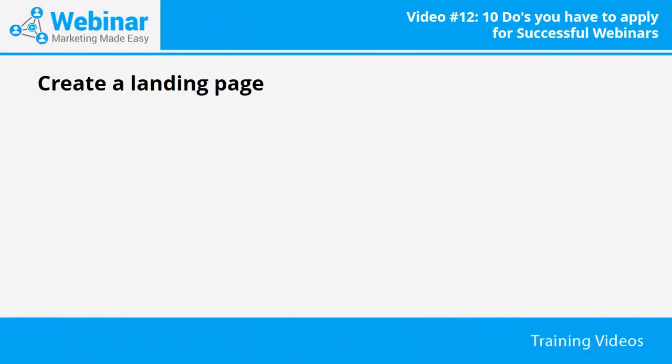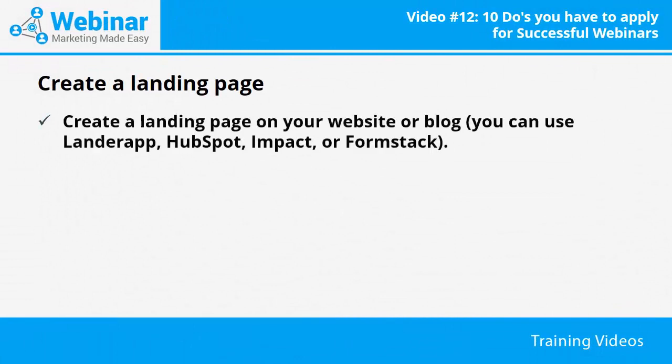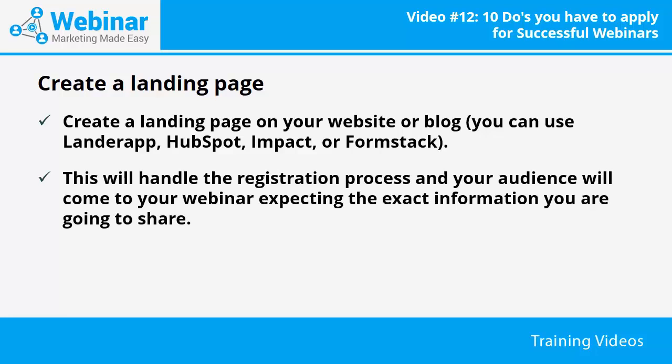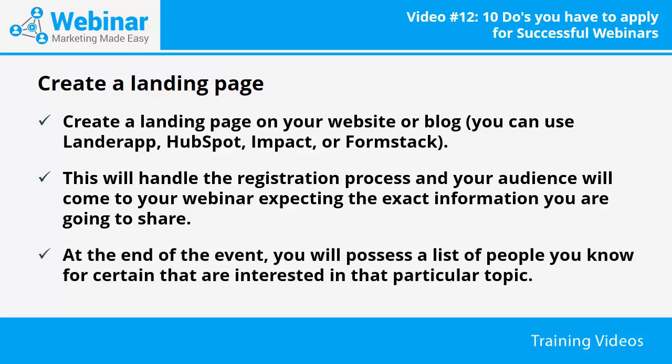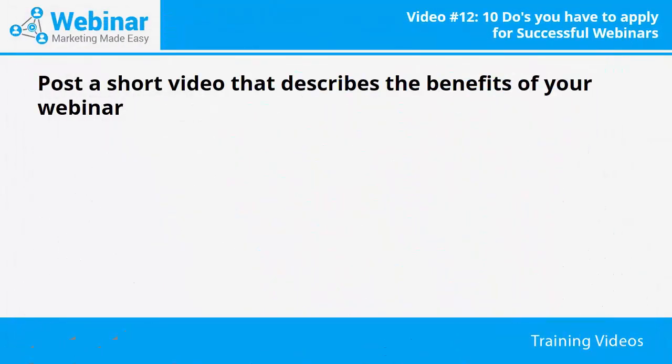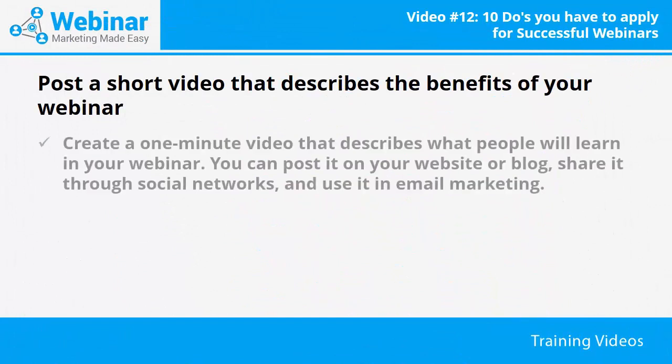Create a landing page on your website or blog. You can use Lander App, HubSpot, Impact, or Formstack — requiring a name, company name, and email address to register — and include all the information about your webinar. This will handle the registration process, and your audience will come to your webinar expecting the exact information you are going to share. At the end of the event, you will possess a list of people you know for certain are interested in that particular topic.